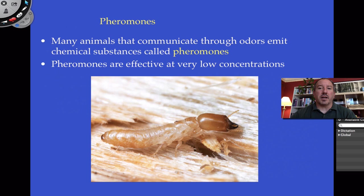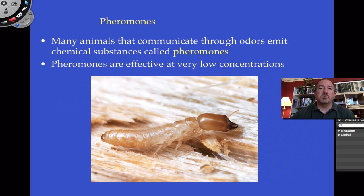One of the great ways in which insects in particular communicate is using pheromones. Pheromones are kind of like hormones — they're chemicals, but hormones are secreted by cells internally and travel through the bloodstream to communicate intention to cells. Pheromones are chemicals through odors that are emitted to the outside. Termites can follow each other using these chemical trails, ants can follow each other using these chemical trails, and bees use pheromones — they're effective at very, very small concentrations.